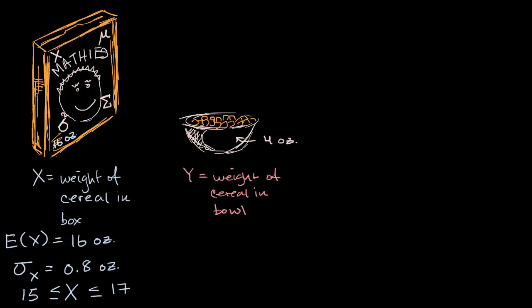Because the expected value of Y, if you took a random one of these bowls, always the same bowl, and if someone filled it with Mathies, the expected weight of the Mathies in that bowl is going to be four ounces.